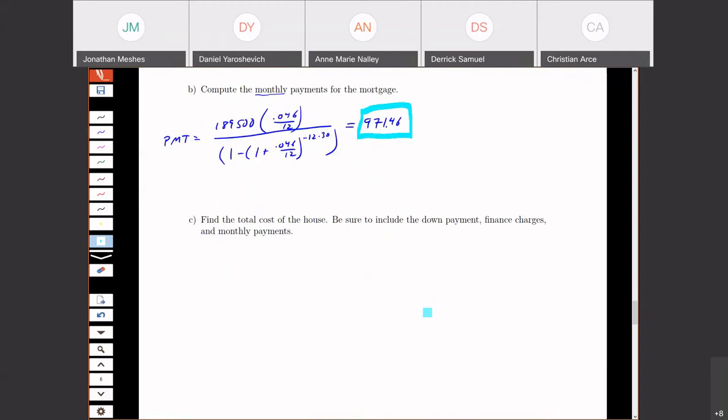Now what we're going to do is find the total cost of the house. To find the total cost, what we need to do is look at our payments and compute those, but also look at what's the money that we paid at the beginning. So first, let's look at our payments. So we have this $971.46, 12 times a year for 30 years. So that comes out to $349,725.60.